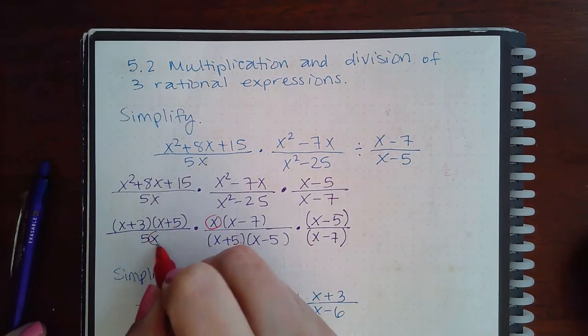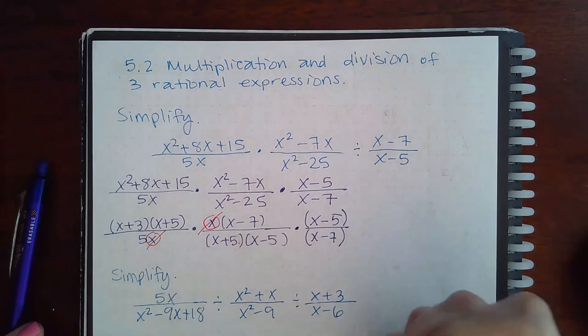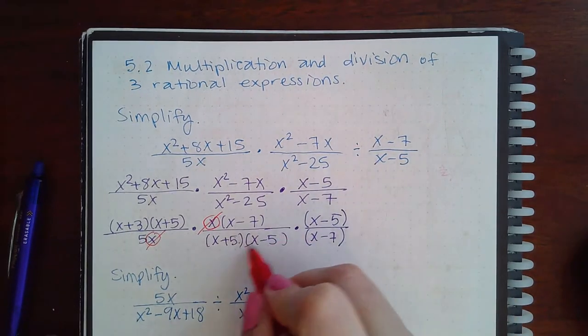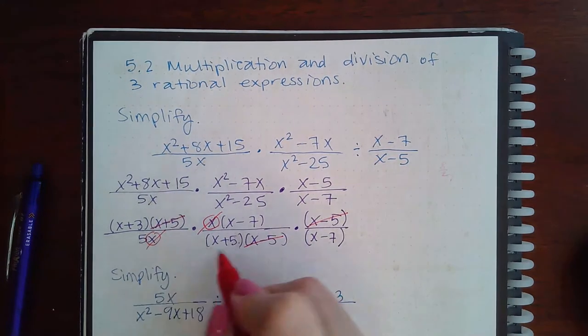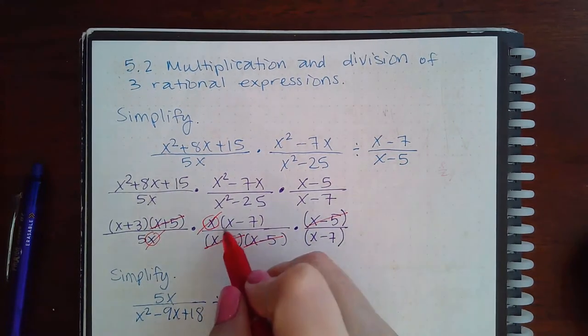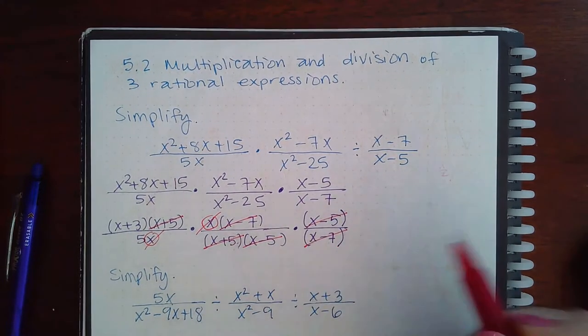I can take this x and this x and reduce those out. I can take the x minus 5 and x minus 5. I can take the x plus 5 and x plus 5. And even the x minus 7 and x minus 7.